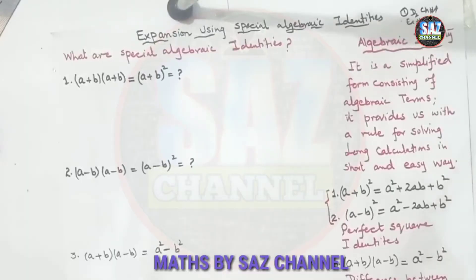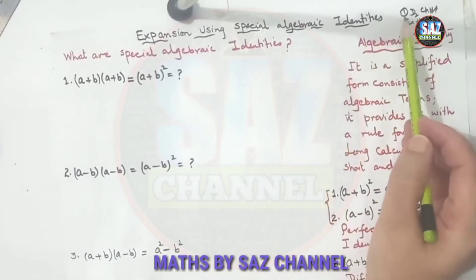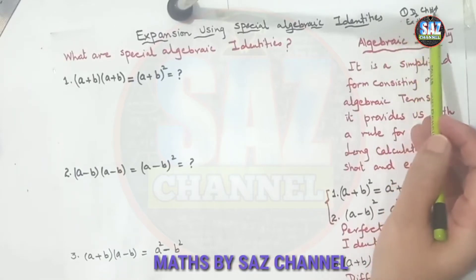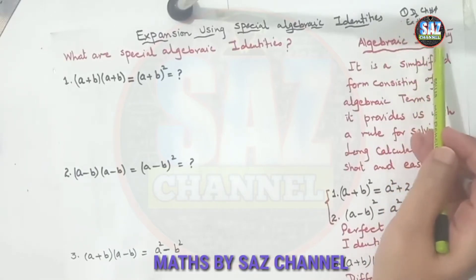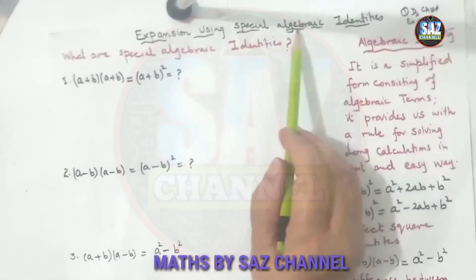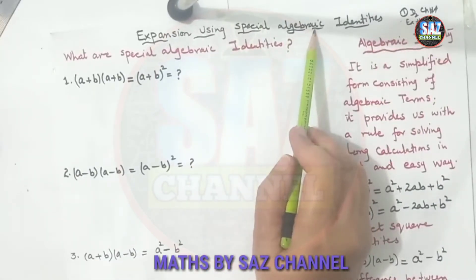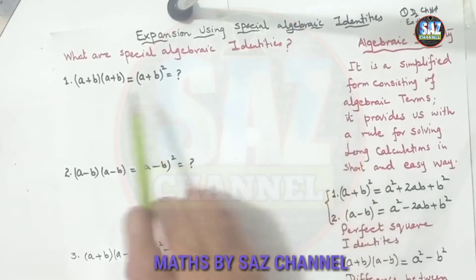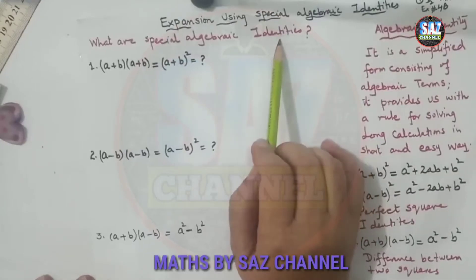Hello and welcome to Maths by SAAS. This is my first lesson of D2 chapter number 4, exercise 4b, which is about expansion by using special algebraic identities. Before going to the lesson, it is important to understand what special algebraic identities are.